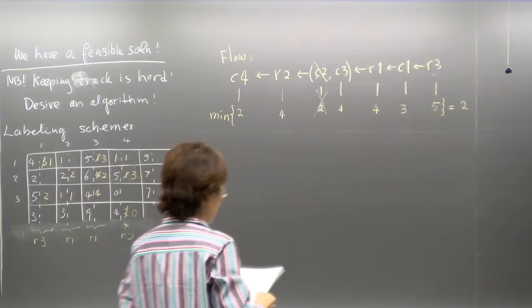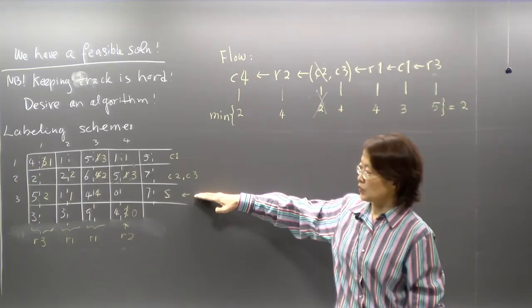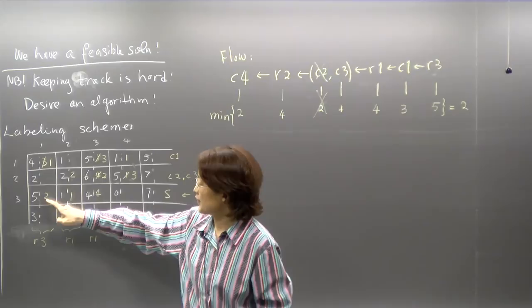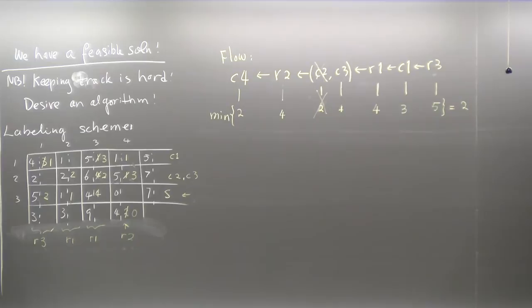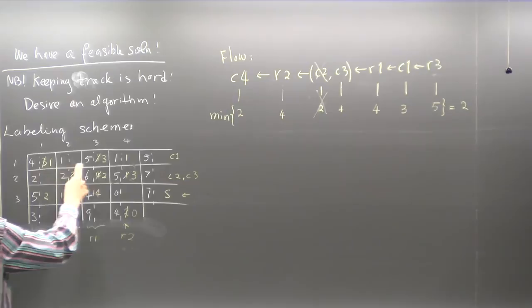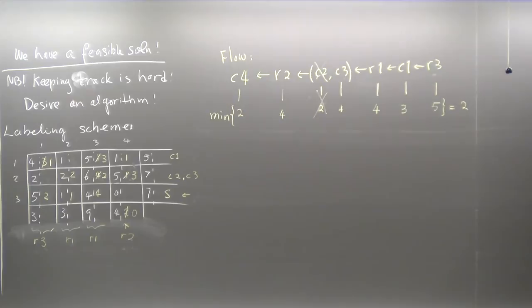So let's look back at how we labeled: we start with the row with surplus, then look at where x_{ij} < k_{ij} and label those columns. For each labeled column, we look at where x_{ij} > 0 (can be reduced) to label further rows, and keep doing this until we land at the column with unmet demand — then we've found a path. If by this labeling we cannot reach the destination column, the problem is not feasible.